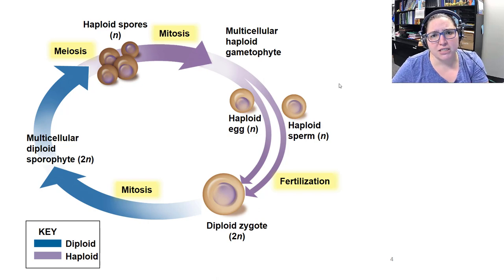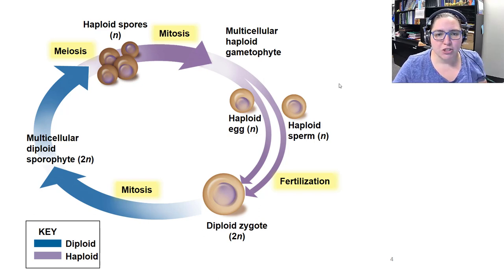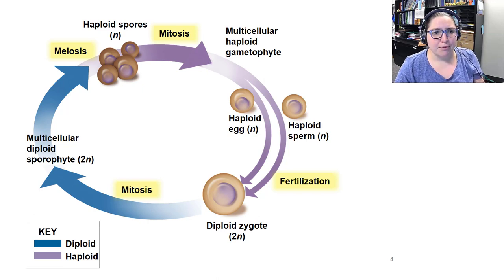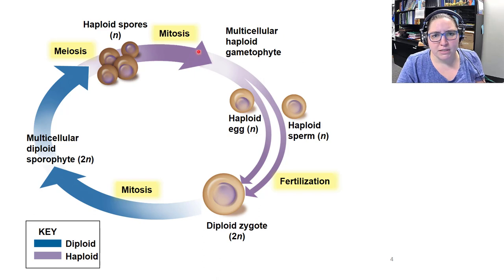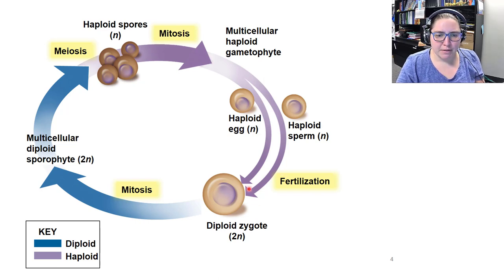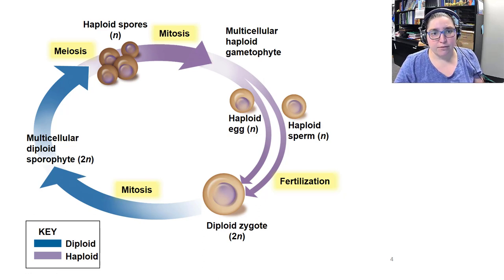Here's the alternation of generations life cycle for review. Alternation of generations has a diploid multicellular phase and a haploid multicellular phase. The multicellular diploid sporophyte generation undergoes meiosis to produce haploid spores. Those spores grow up by mitosis to form the multicellular gametophyte generation, which produces haploid gametes by mitosis. Then sperm and egg meet, a diploid zygote forms, and that grows up to become the multicellular diploid sporophyte generation.